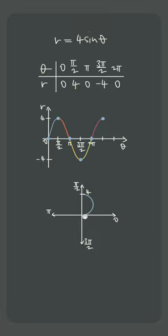So at the angle 0, we're at the pole, but by the time we get to pi over 2, we're 4 units away from the pole.